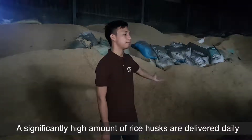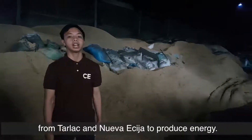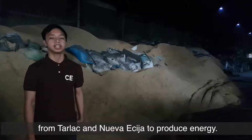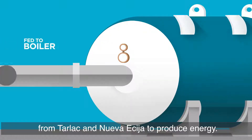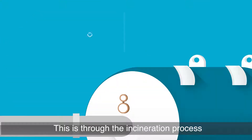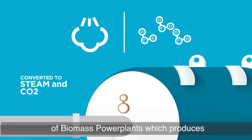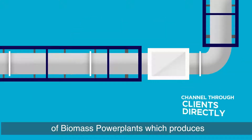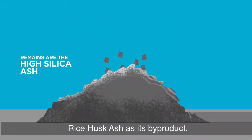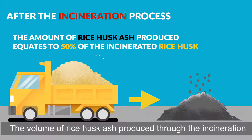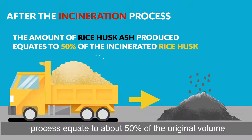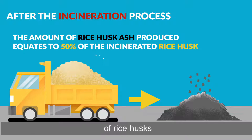Significantly high amounts of rice husk are delivered from Tarlac and Nueva Ecija to produce energy. This is done through the incineration process of biomass power plants, which produces rice husk ash as its main byproduct. The volume of rice husk ash produced through the incineration process equates to 50% of the original volume of rice husk.